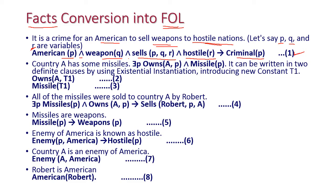The statement 'country A has some missiles' uses existential instantiation. So there exists p such that Owns(A, p) ∧ Missile(p). By applying existential instantiation and introducing a new variable t1, this becomes: Owns(A, t1) as the second sentence and Missile(t1) as the third statement.